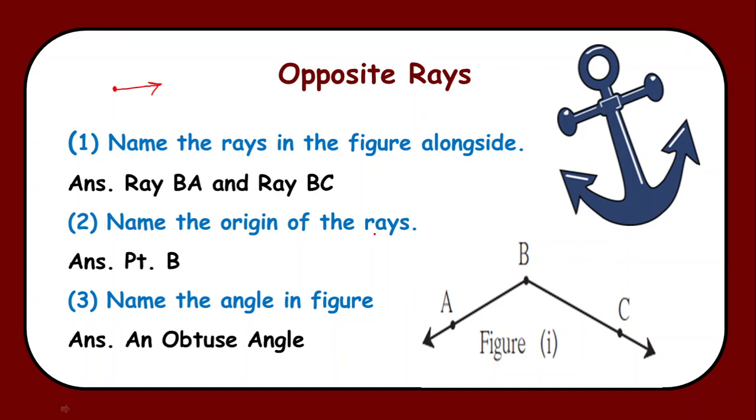We need to name the origin of the rays. Now what is meant by an origin? An origin is the starting point of the ray. So here in this figure we have point B as the origin for both the rays, that is for ray BA as well as ray BC.